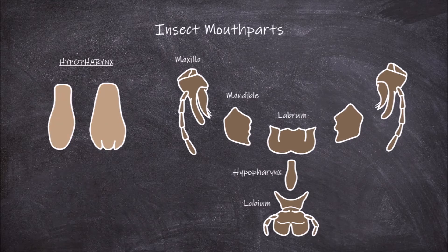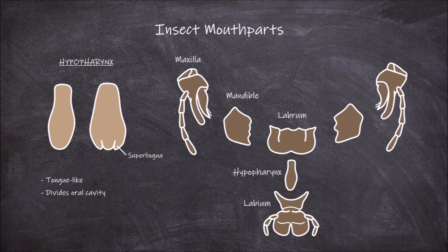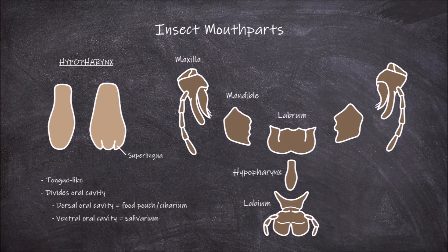The next mouth part is the hypopharynx, which is a tongue-like structure. In certain insects the hypopharynx has a pair of lobes, one found on each side, called superlingua. The hypopharynx divides the oral cavity of the insect into a dorsal and ventral area. The dorsal area of the oral cavity forms the food pouch called the cibarium. The ventral or lower area of the oral cavity forms the salivarium, which the salivary duct opens up into.